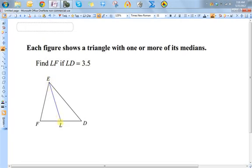Well, the definition of a median goes from the midpoint to the vertex, so that means that these two lengths have to be equal. So LF must be equal to LD, so LF must equal 3.5.